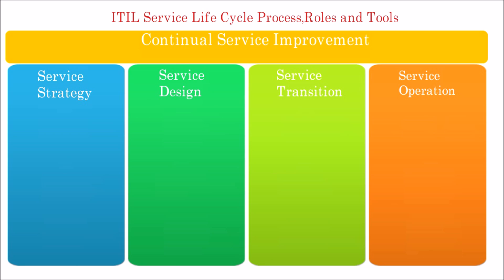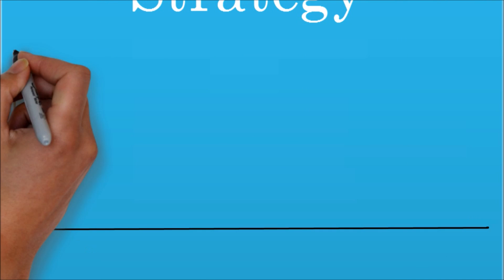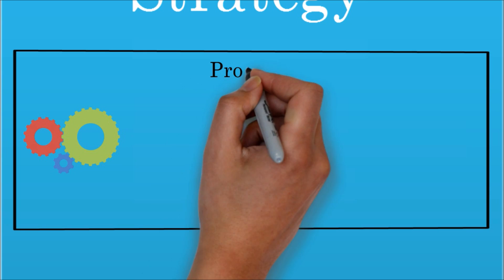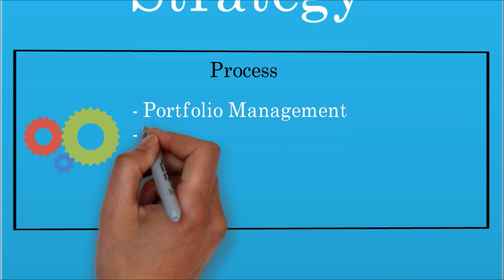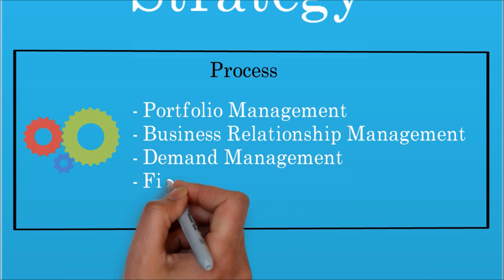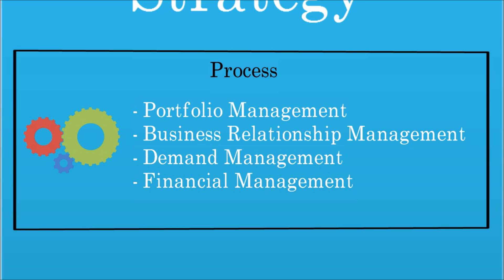Let's see the four processes in Service Strategy. First is Portfolio Management. The service portfolio defines all services that a service provider can provide. It helps to control service management investments throughout an enterprise and actively manage their value. Second is Business Relationship Management, which deals with establishing good relationships between the service provider and customers by ensuring that appropriate services are developed to meet customer needs.